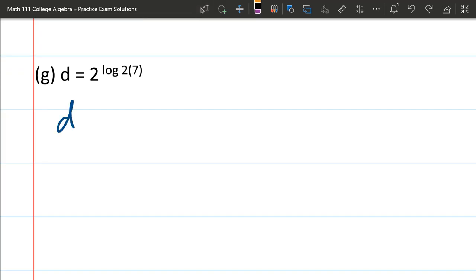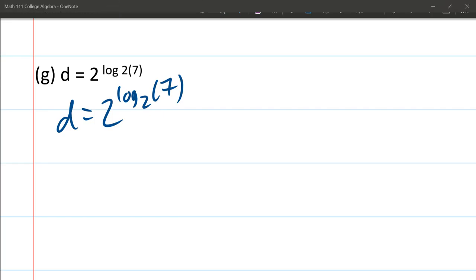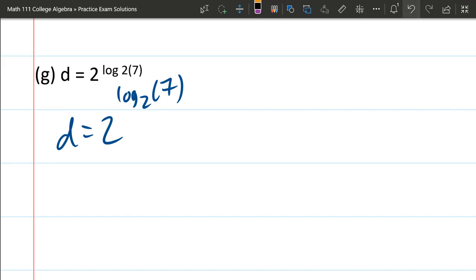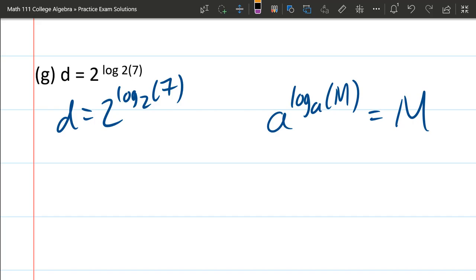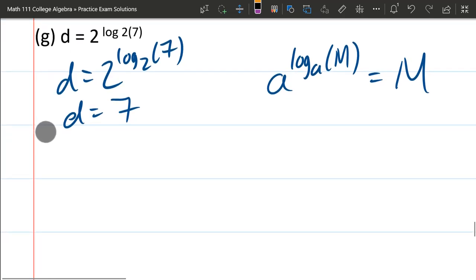Next up. D equals 2 to the log 2 of 7. So here we have an exponential composed of the log, which also cancels out. If you write them in the other order, if we have base A to the log base A of M, this A to the log A cancels and you just get M. So this one's actually trivial when you realize that these functions are being composed, base 2, base 2, everything works out. You're just going to get D equals 7. There's not much going on on this part G.